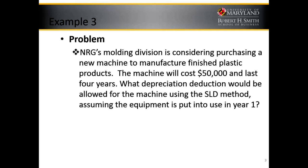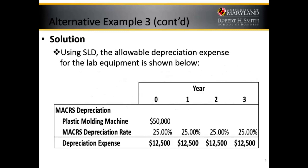We've got a company looking at a new product that's going to cost $50,000 and last four years. What depreciation deduction would be allowed using the straight-line method? The idea is you take $50,000 divided by 4 — that's 25% or $12,500 each year.